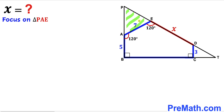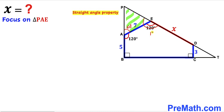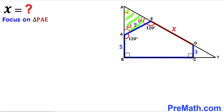Let's focus on triangle PAE and recall the straight angle property. This whole angle is 180 degrees, and since angle BAE is 120 degrees, the remaining angle has to be 60 degrees. Likewise, on the other side, the straight angle is 180 degrees and angle AED is 120 degrees, so that angle is also 60 degrees. Since the sum of all three interior angles of triangle PAE equals 180 degrees, the third angle must also be 60 degrees.